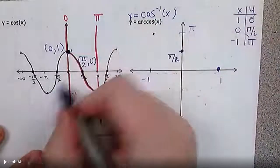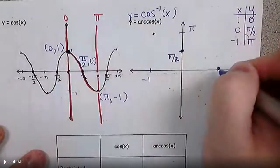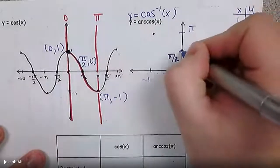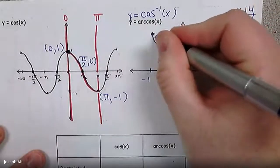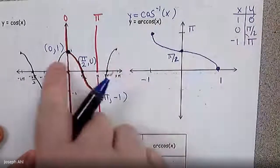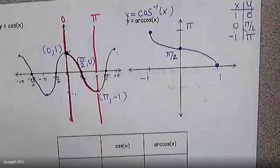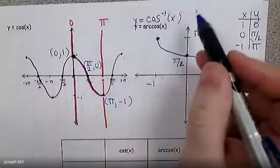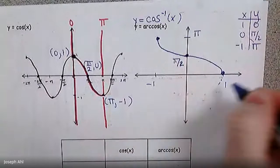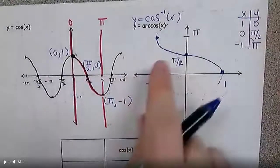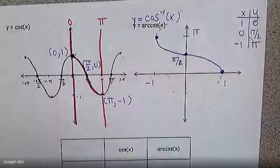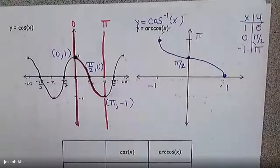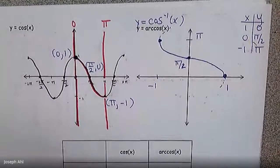Plotting the points (1, 0), (0, π/2), and (−1, π), and thinking about flipping over the line y = x, the orientation of the curve wraps around like this. These graphs are not wrapping around the x-axis anymore — they want to wrap around the y-axis, but we're not going to let them because then it wouldn't be a function. Here's the exact graph for cosine inverse — arc cosine always looks like this.